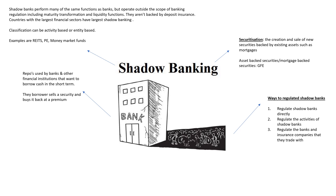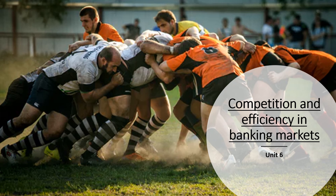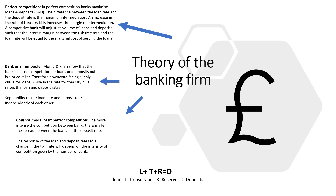Ways to regulate shadow banks include: regulating the shadow banks directly, regulating their activities, and regulating the banks and insurance companies they trade with. In terms of competition and efficiency, a competitive bank will adjust its volume of loans and deposits such that the interest margin between the risk-free rate and the loan rate equals the marginal cost of serving the loans.